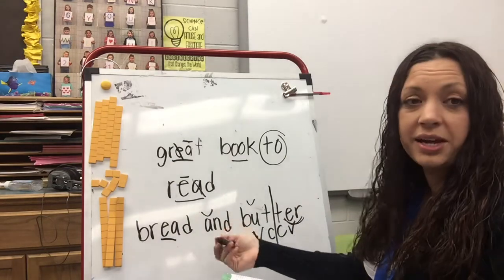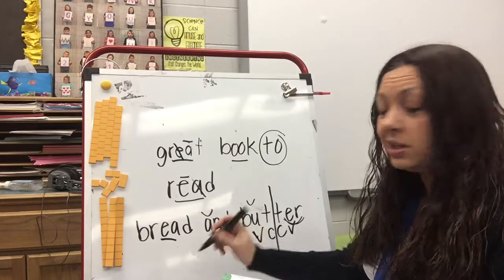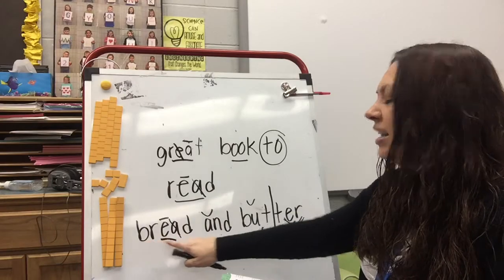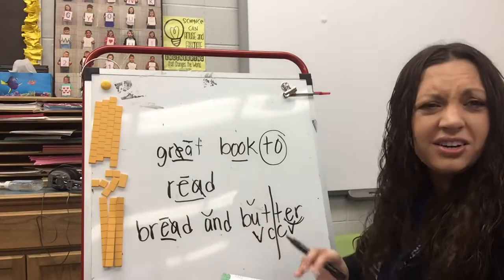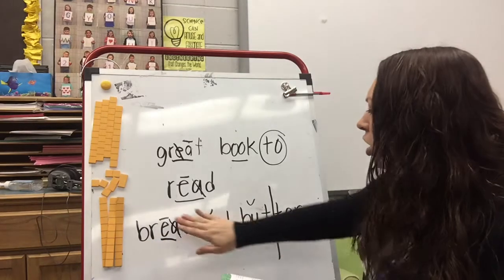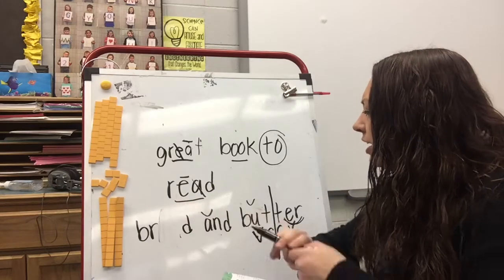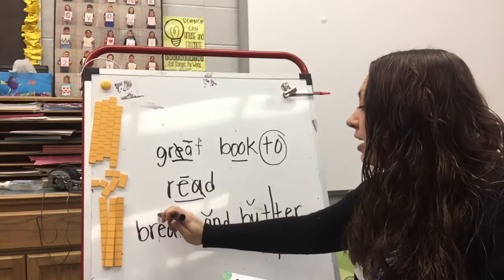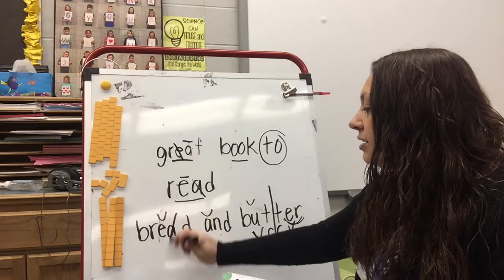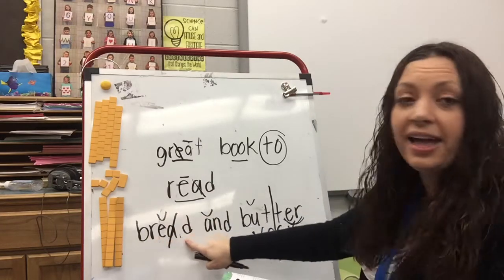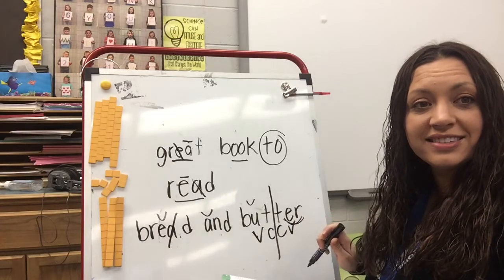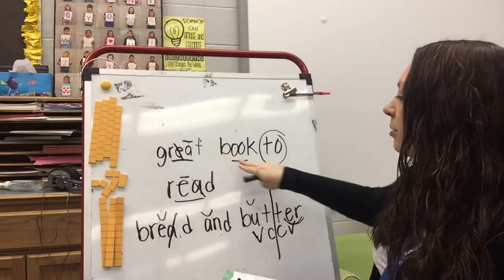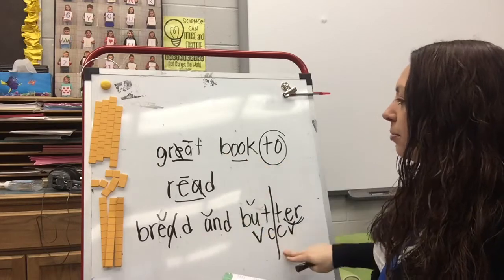The first way I can do it is the long E, silent A: 'breed.' 'Breed and butter' — does that make sense? No. All right, let's try it again. I can also make it a short E, silent A: 'bred.' 'Bread and butter' — does that make sense? Yes, it does! So we have 'great book to read, bread and butter.'